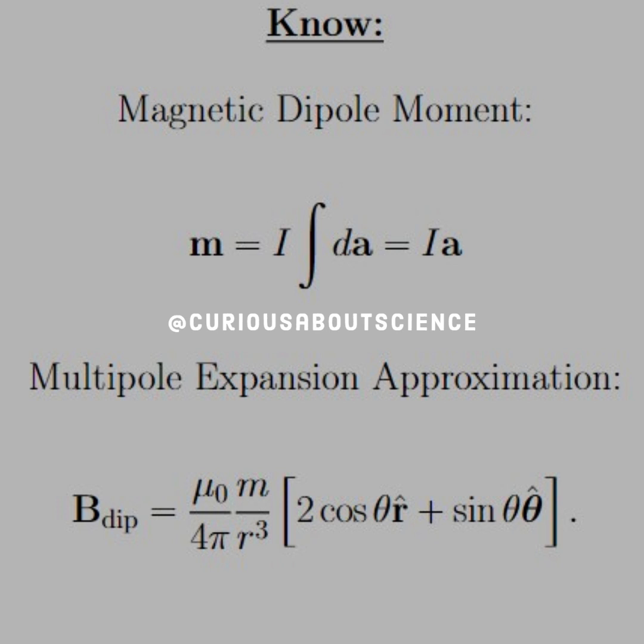And the multipole expansion approximation is the magnetic field of a dipole equals mu naught over 4 pi M over R cubed times 2 cosine theta R hat plus sine theta theta hat. Alright, let's jump in.